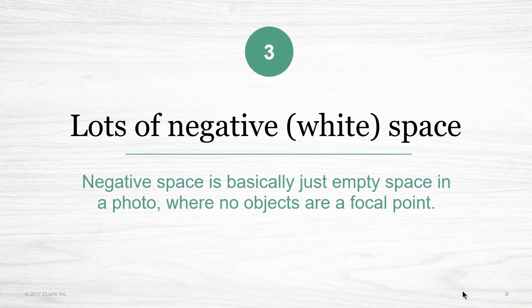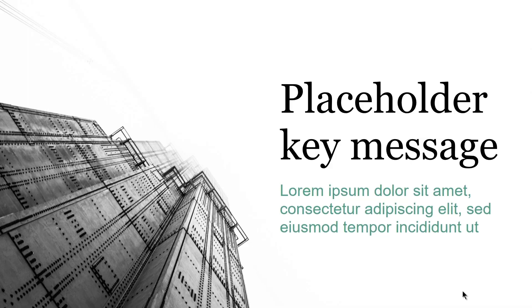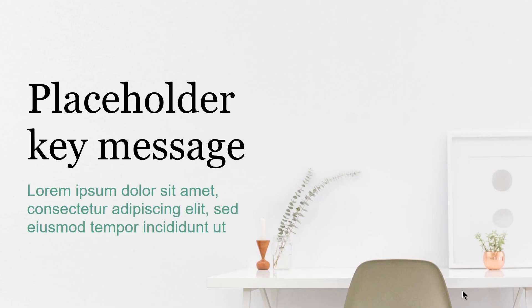Finally, the third rule is to find a photo that has a lot of negative space. In design, negative space is just a fancy term for the empty space in a composition or photo. Here's a great example: I have a beautiful dramatic shot of a bridge, and the sky becomes the negative space of this composition — it's a perfect container for text or a key message. Another example is this photo of a workspace, where the wall becomes the negative space for placing a key message.